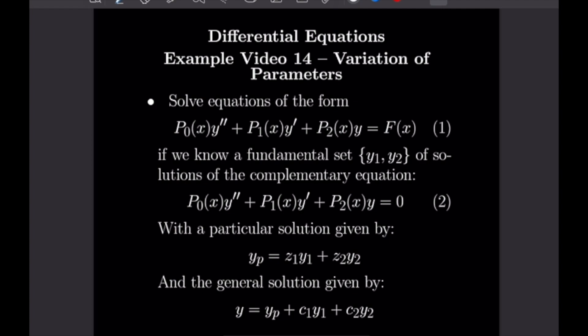Generally speaking, for these types of problems we will either be given a fundamental set of solutions to the complementary equation, or there will be a simple method to find it. If we know a fundamental set of solutions y1 and y2, our particular solution is given by yp = z1·y1 + z2·y2, and our general solution is y = yp + c1·y1 + c2·y2. We set up a system of equations using the particular solution definition and the complementary equation to solve for z1 and z2.